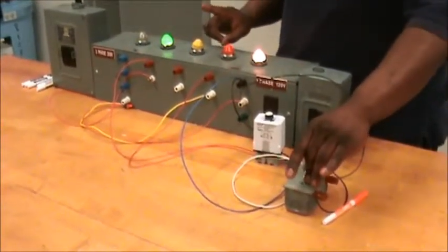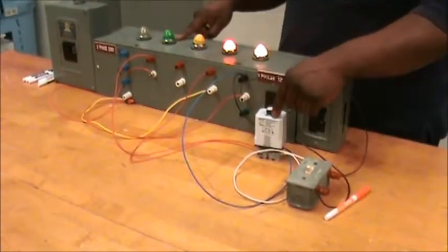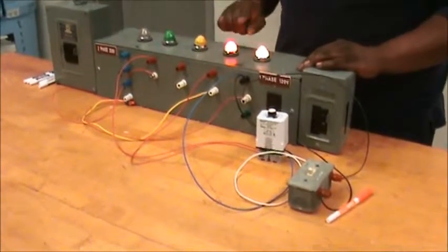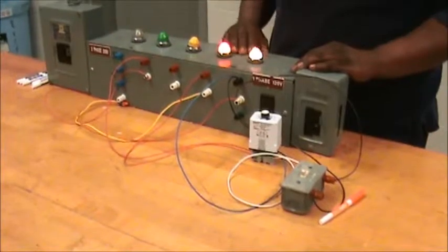When I flip the switch, there's a delay. Now that the coil is energized, after the time is done, the contacts change their state. Green light goes off, red light comes on.